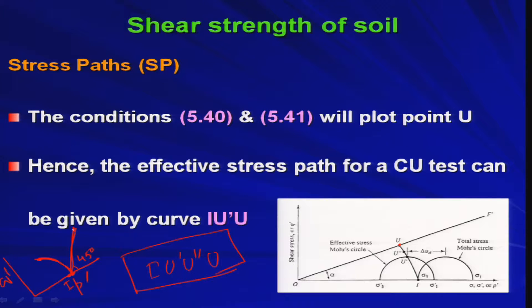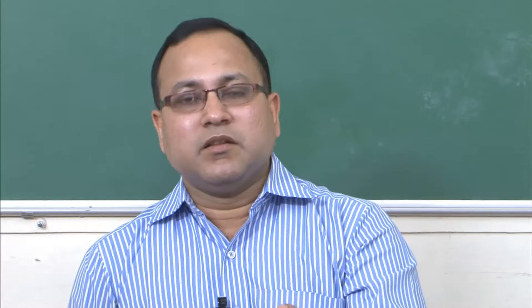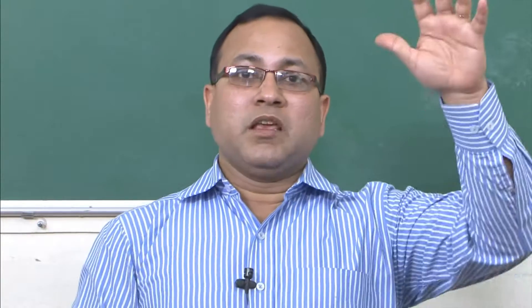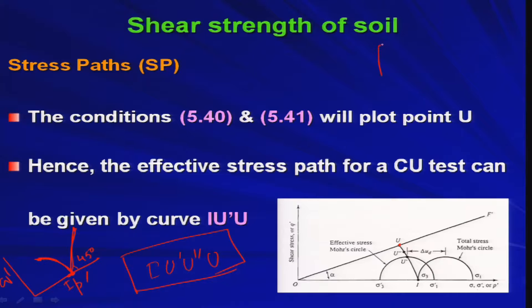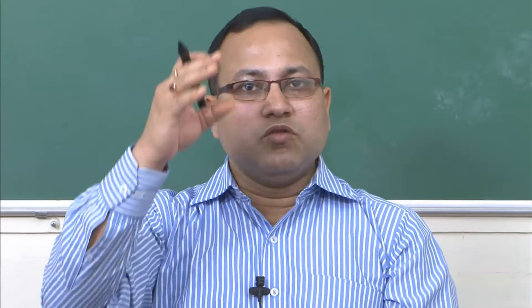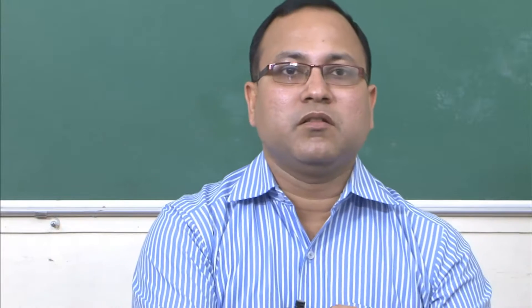This concept is very fundamental and important for understanding critical state soil mechanics. By knowing how to construct stress paths, you can plot them for any type of test — not only CU or CD. For example, you could start with a CU test and, before reaching failure, open the drainage valve and switch to a CD test on the same sample. This kind of combined drainage scenario can also occur in the field.